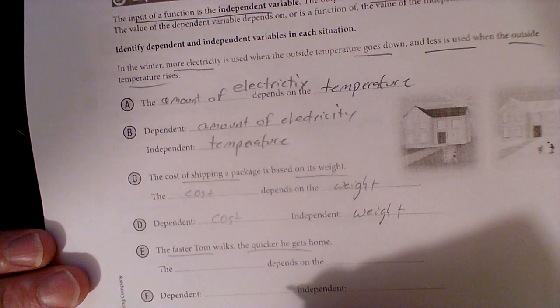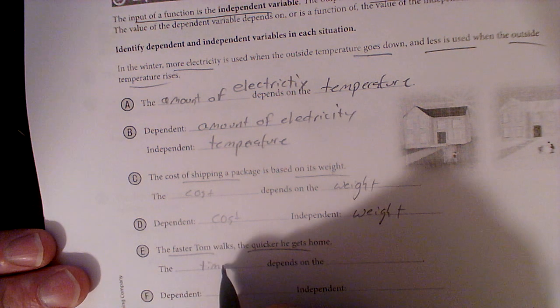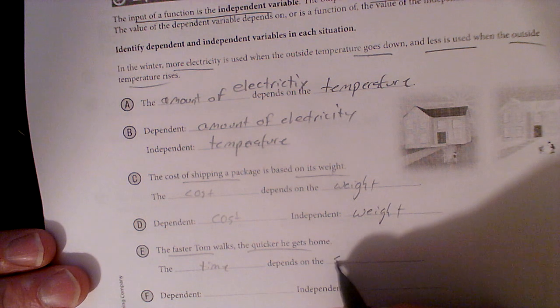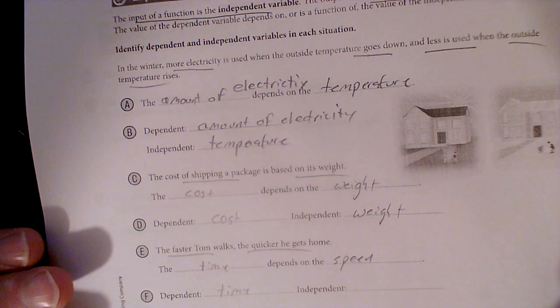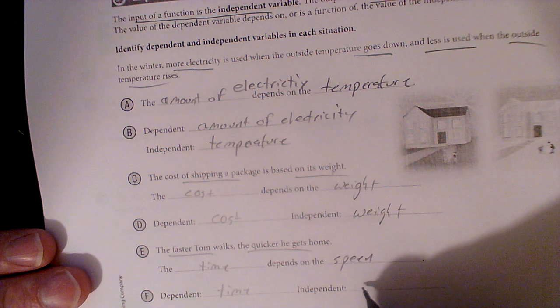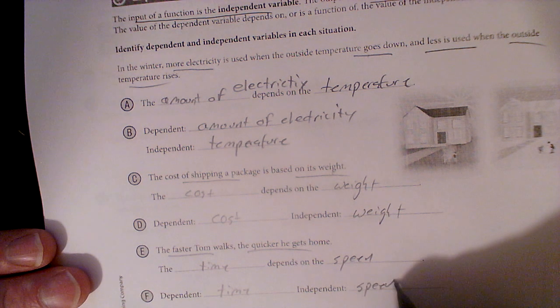The faster Tom walks, the quicker he gets home. The time depends on the speed. Dependent is time it takes to get home. Independent is speed that he walks.